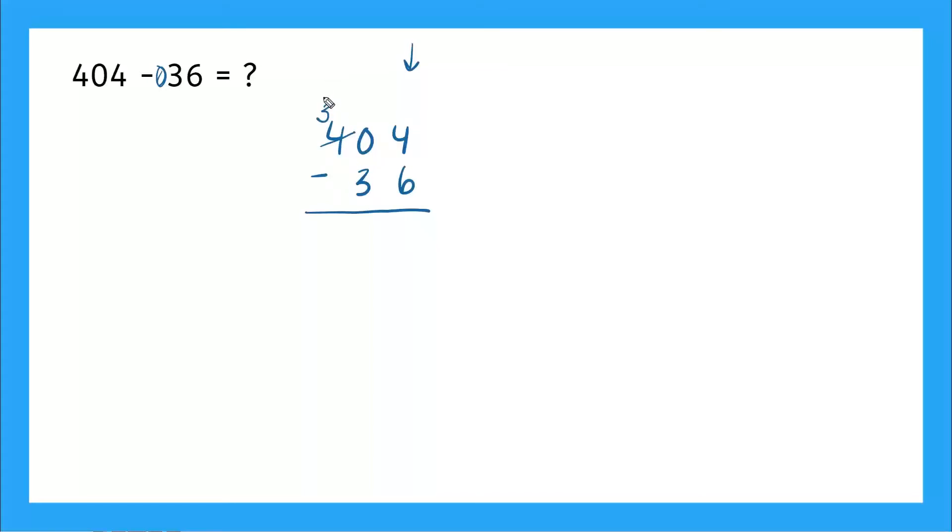So we're going to take a hundred from here, so this is going to be three. Remember, this is 300 because this is our hundreds column, and I'm going to give a hundred over here to my tens place. So this zero is now going to be a 10 because a 10 in the tens place means a hundred. Perfect.